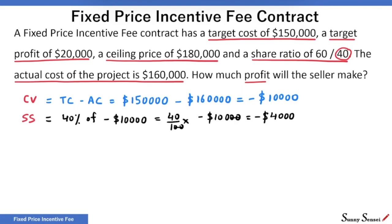Next, let's look at the actual price, which is actual cost plus target profit. We could have stopped here if the seller had managed to keep the actual cost exactly equal to the target cost. But in this example, we have a cost variance — it is not zero. We have to adjust the target profit by the seller's share of risk for the cost variation.